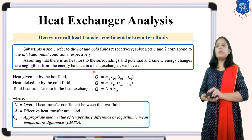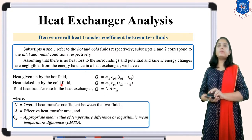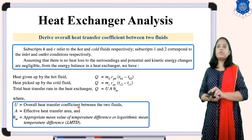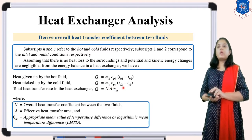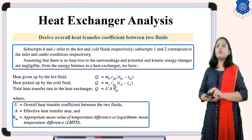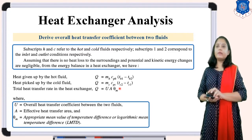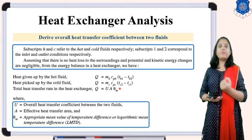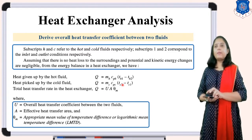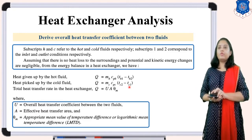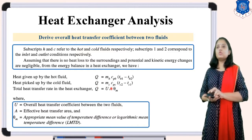For the cold fluid receiving heat, Q = Mc · Cpc · (TC2 - TC1), where Mc is mass flow rate of cold fluid, Cpc is specific heat of cold fluid at constant pressure. TC2 is greater than TC1 because the cold fluid receives heat from the hot fluid. TC2 is the exit temperature and TC1 is the entry temperature of the cold fluid.